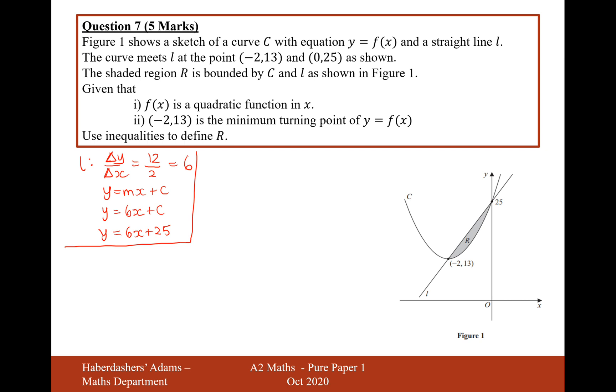So we'll park that on one side. Now we'll look at curve C. The minimum point is at minus 2, 13, so what I'm going to write here is actually I'm going to write it in completed the square form. So y equals a brackets x plus b squared plus c. This is any quadratic but written in completed the square form.